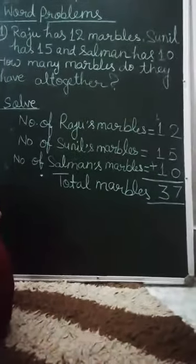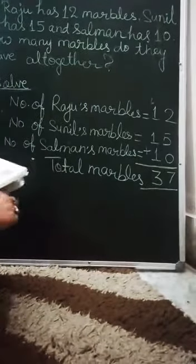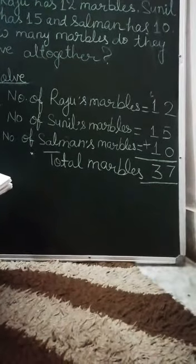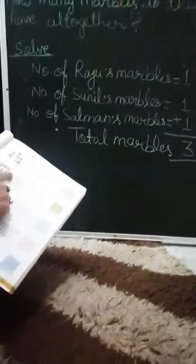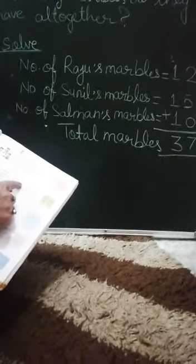Now, next question. A fruit seller has 8 Alphonso mangoes, 14 Langra mangoes, and 25 Dasheri mangoes. How many mangoes does he have in all?